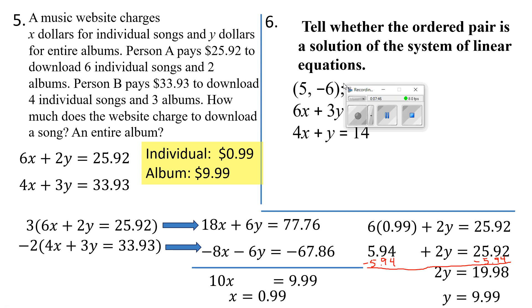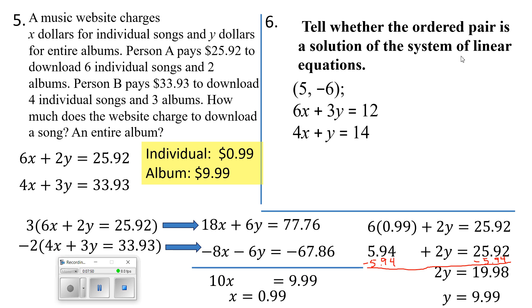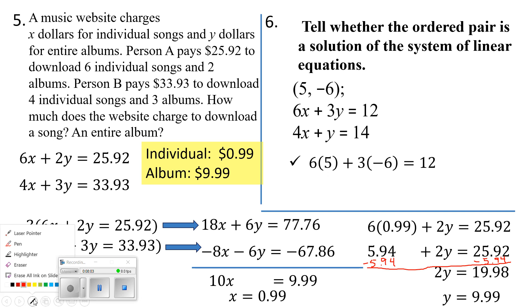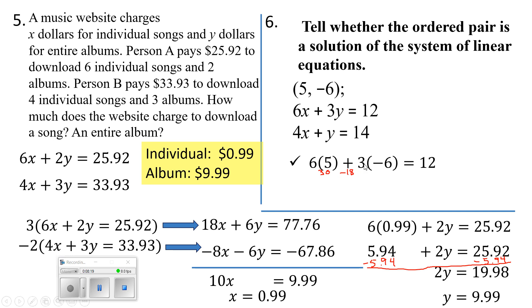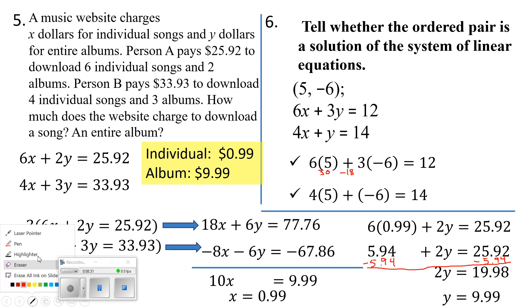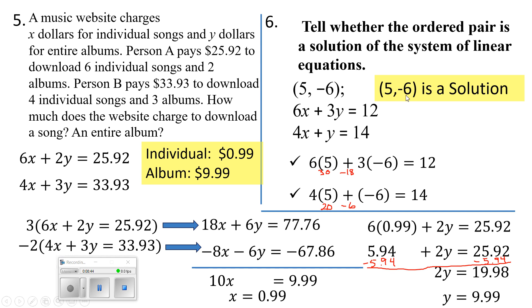Number 6 says tell whether the ordered pair is a solution of the system. I'll plug in 5 for x and negative 6 for y in both equations. In the first: 6 times 5 is 30, and 3 times negative 6 is negative 18, so 30 minus 18 is 12 — that works. In the second: 4 times 5 is 20, and 20 minus 6 is 14 — that checks out too. So the solution is 5 and negative 6.